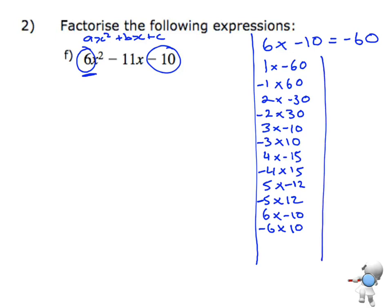So now what I need to do is I need to think about adding those numbers. And I've got to figure out which of these ones add to give me negative 11. That's what I'm looking for. So if I did 1 plus negative 60, then that's going to give me negative 59. Negative 1 plus 60 is going to give me positive 59. 2 plus negative 30 is going to give me negative 28. Negative 2 plus 30 will give me positive 28.